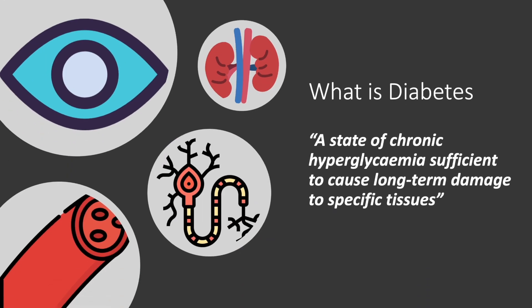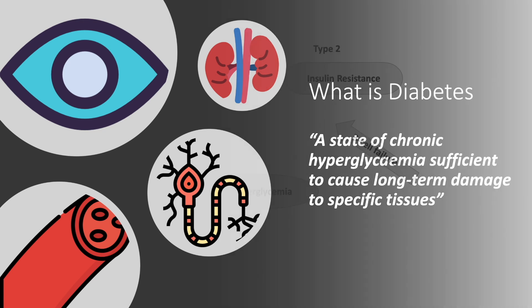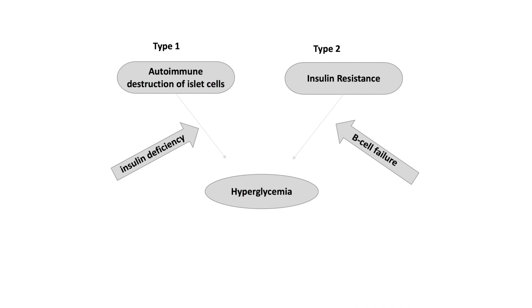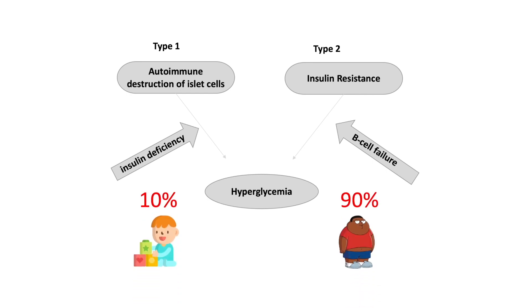Diabetes is chronic hyperglycaemia that can cause long-term damage to specific tissues, notably the retina, the arteries, the nerves, and the kidneys. There are two types of diabetes, with type 1 being due to autoimmune destruction of the cells that release insulin. However, this type is far less common, only affecting around 10% of all patients with diabetes, and also tends to present at an earlier age.